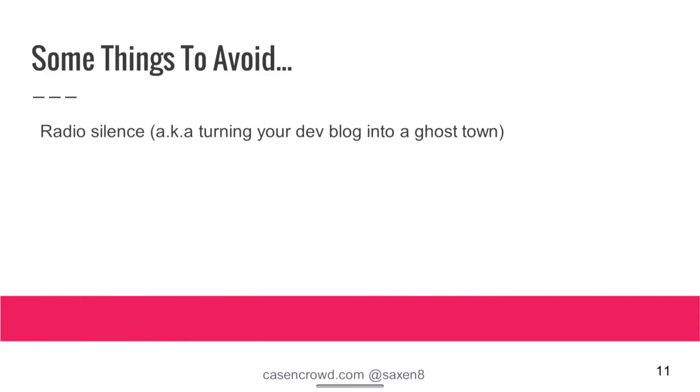Some things to avoid: radio silence — don't turn your dev blog into a ghost town; it can't do anything good. Writing long emails to the press — usually someone working for a big gaming site gets 40 or 50 emails a day, so you don't want to waste their time. Be friendly, be clear, get to the point, include everything. Don't ask them if they'd want a key for your game — just give it away. And always update with photos on Twitter and Facebook — don't just post links and text or a wall of text, because the Facebook algorithm will downrate that kind of content and it won't be shown to as many people.